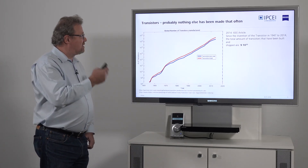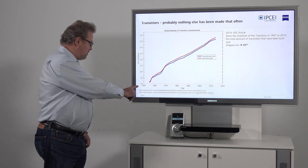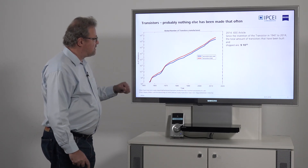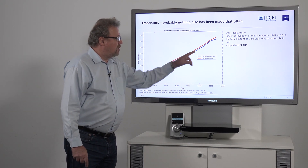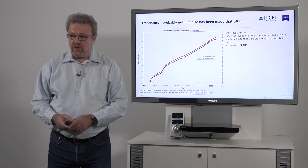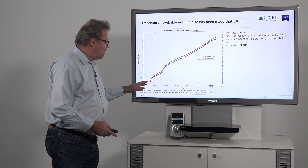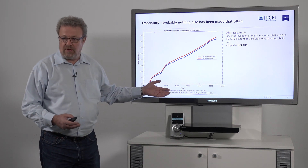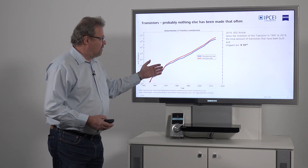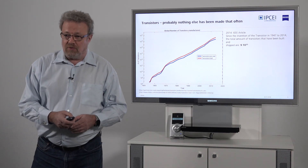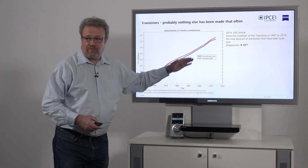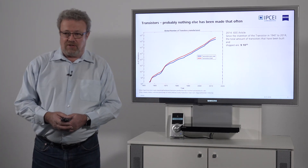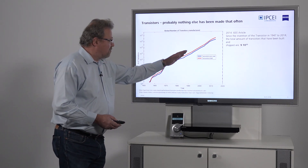Since the invention of the transistor around the 1950s, the blue curve on this chart shows the number of transistors produced per year, and the red curve is the number of transistors made since then — so the red curve is the integral of the blue curve. For those who wonder why the integral isn't much larger: this is a logarithmic scale, and the integral of the exponential function is the exponential function. So this is properly calculated.